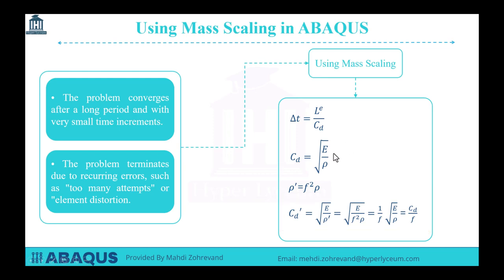Then, by inserting this into the formula for the minimum time increment, we can increase this variable. This process, known as mass scaling, allows us to reduce the analysis time, simulation time, and computational cost of our simulations in Abacus. Next, I will discuss how to apply these settings and their details in Abacus, as well as examine the impacts of using this technique on solving time and simulation results. Stay with me.